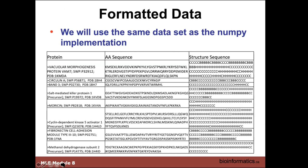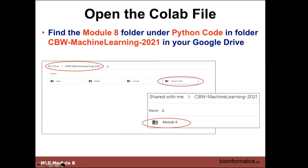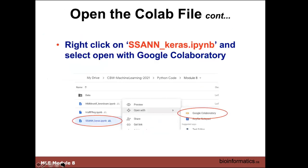This is an example of that — the protein sequence name, secondary structure — and we can use this in this format. The actual code for this Keras module is in module eight; you can open it up, click on it, and see the Keras version of it. Make sure you look for Keras — that's important to distinguish from other versions of SAN.